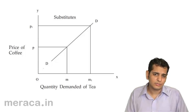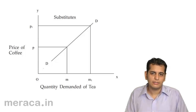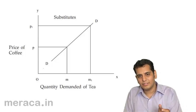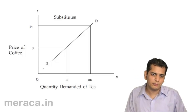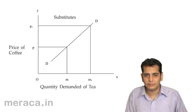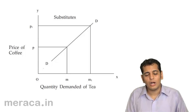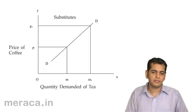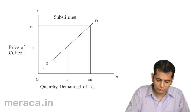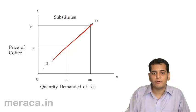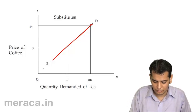We have already discussed that the relation between the price of a substitute and the demand for the good being considered is direct. So how do you think the demand curve will look? The demand curve would be upward sloping from left to right. Let's see how.